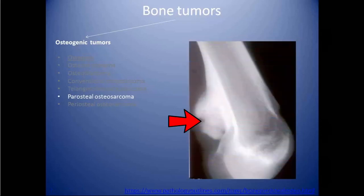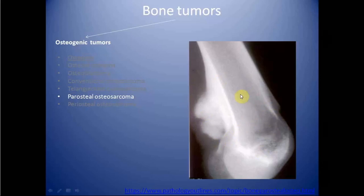Parosteal osteosarcoma is a rare variant of osteosarcoma which arises from the surface of bone. It is mostly seen on the surface of bone, but in rare circumstances it can infiltrate into the marrow cavity. It is most commonly seen on the posterior aspect of the distal femur. It is a slowly enlarging mass with a central dense area — in contrast to myositis ossificans, its differential diagnosis, in which there is peripheral ossification, whereas in parosteal osteosarcoma there is central ossification.